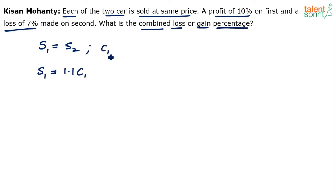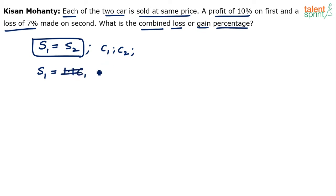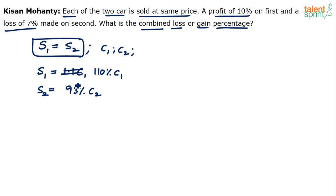Let's assume the cost prices are C1 and C2 respectively. S1 equals S2. The first car was sold at 10% profit, meaning selling price should be 110% of cost price — that is 110% of C1. For the second car, a loss of 7% means the selling price should be 93% of cost price, which is 93% of C2. So S1 = 110% of C1, S2 = 93% of C2, and S1 = S2.